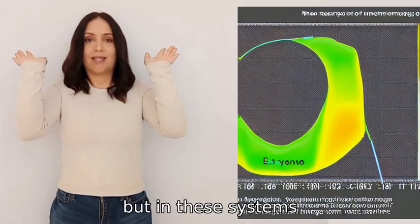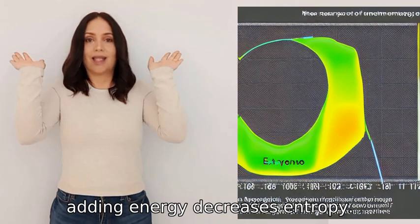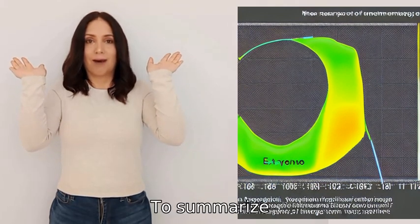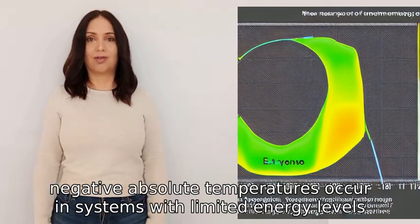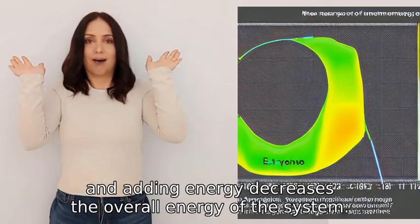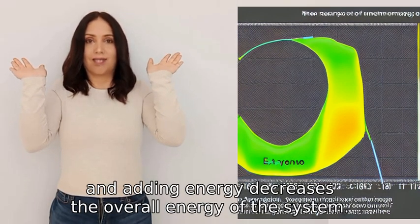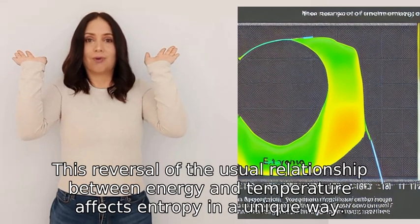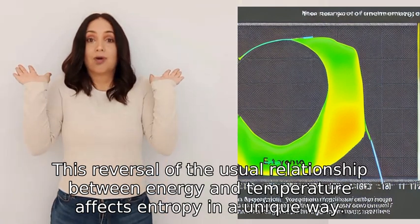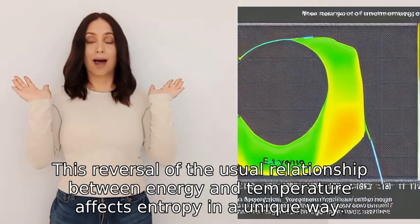Typically, adding energy increases entropy, but in these systems adding energy decreases entropy. To summarize, negative absolute temperatures occur in systems with limited energy levels, and adding energy decreases the overall energy of the system. This reversal of the usual relationship between energy and temperature affects entropy in a unique way.